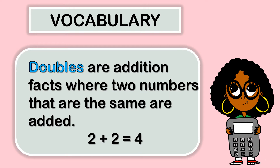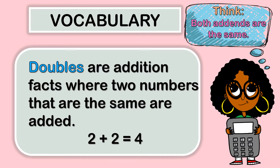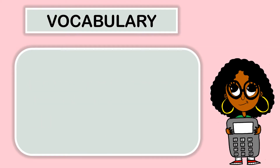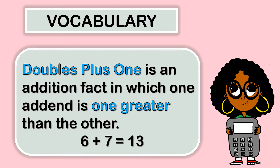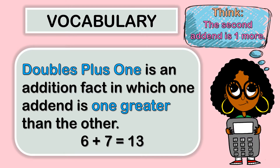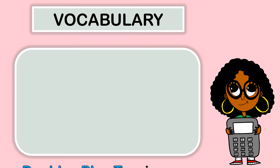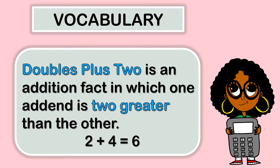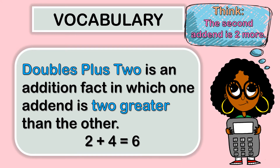Doubles are addition facts where two numbers that are the same are added. Two plus two equals four — here we see that both addends are the same. Doubles plus one is an addition fact in which one addend is one greater than the other. Six plus seven equals 13 — the second addend is one more. Doubles plus two is an addition fact in which one addend is two greater than the other. Two plus four equals six — the second addend is two more.